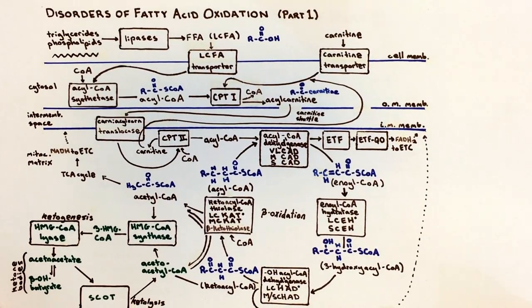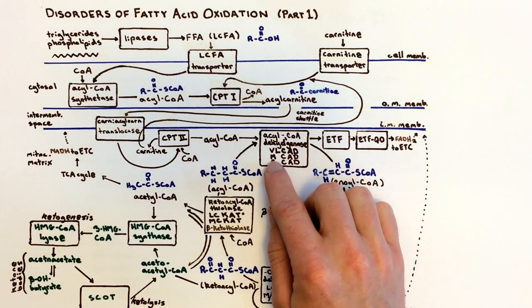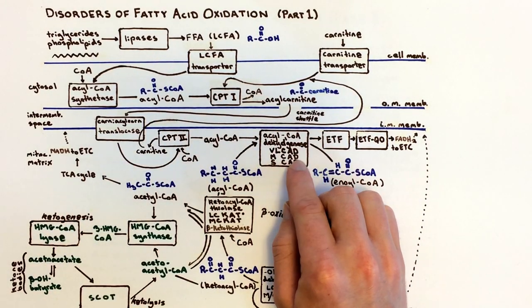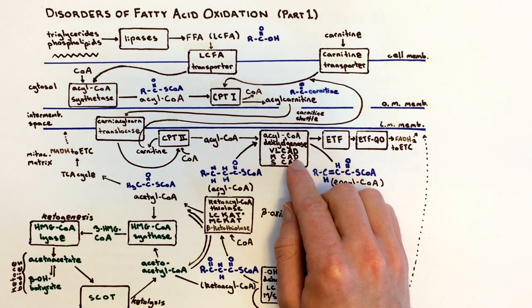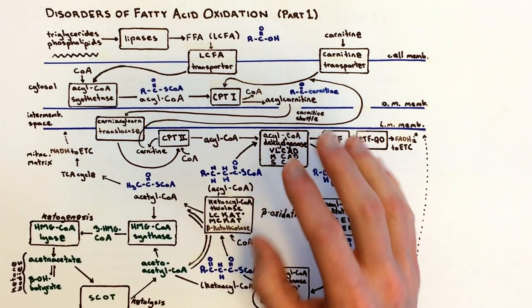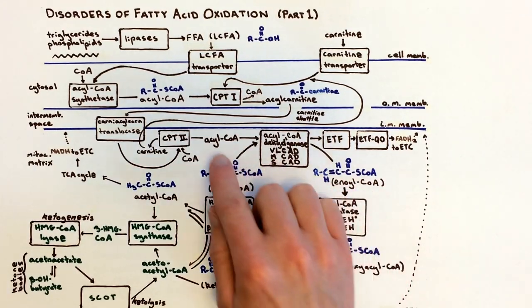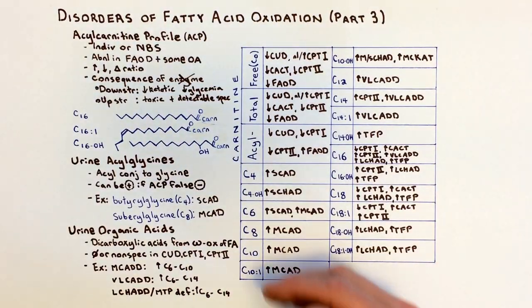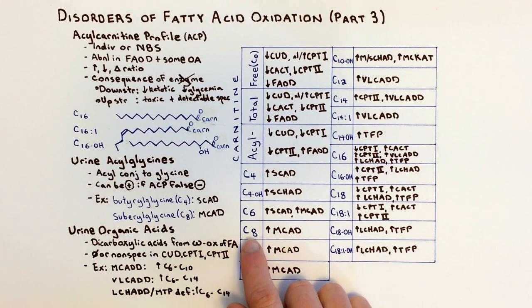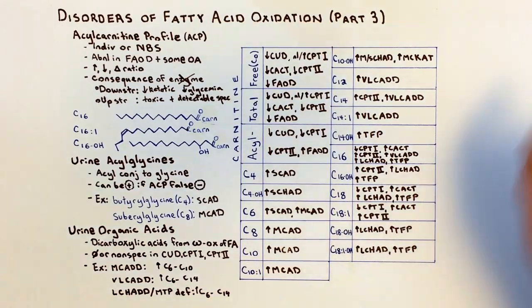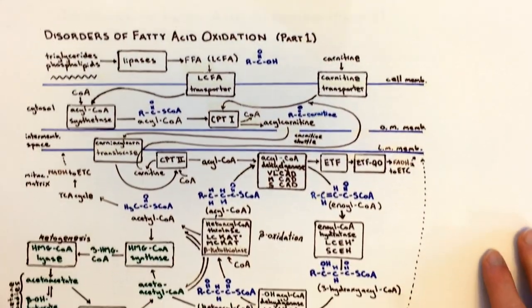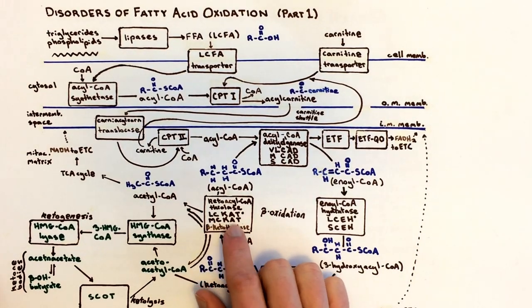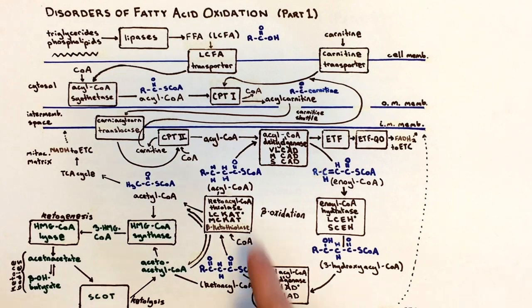Now let's look at MCAD — the most commonly mutated enzyme in fatty acid oxidation disorders in the United States. In MCAD deficiency, medium-chain acyl-CoAs cannot be metabolized, so we get a buildup of medium-chain acylcarnitines: C6, C8, C10, and C10:1. A minor enzyme, MCKAT, can cause a buildup of the C10OH variety of acylcarnitine if defective.